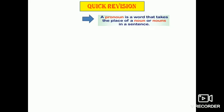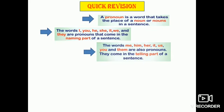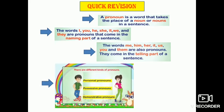Let's do a quick revision. A pronoun is a word that takes the place of a noun or nouns in a sentence. The words I, you, he, she, it, we and they are pronouns that come in the naming part of a sentence. The words me, him, her, it, us, you and them come in the telling part of a sentence. The three kinds of pronouns are personal pronouns, possessive pronouns, and demonstrative pronouns.